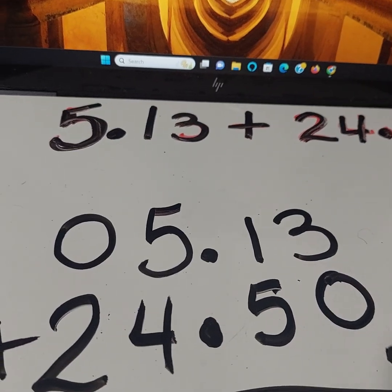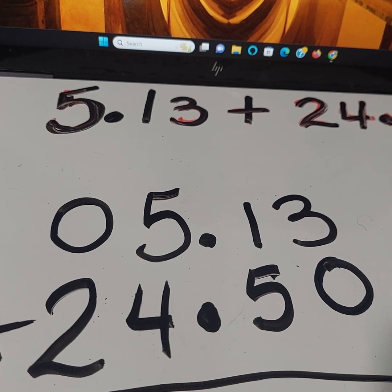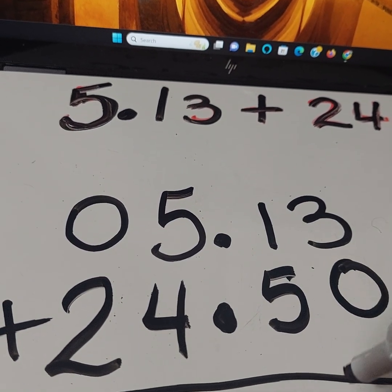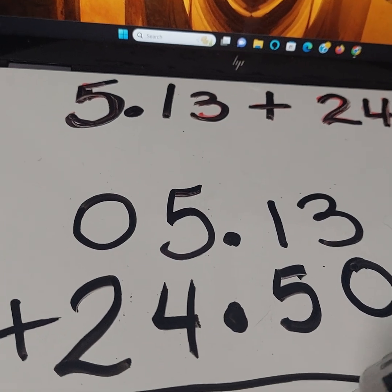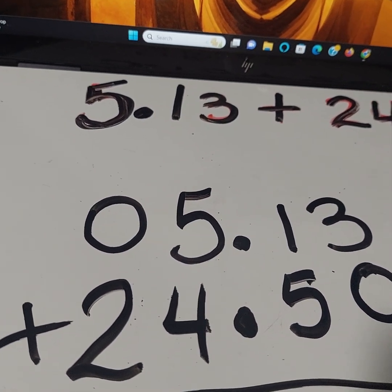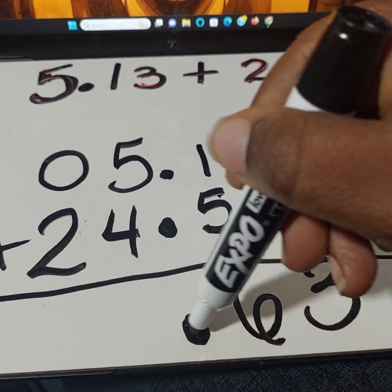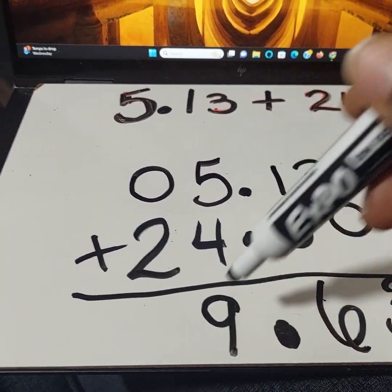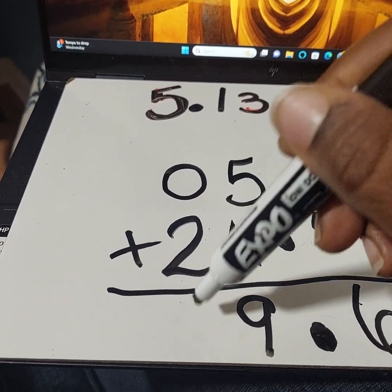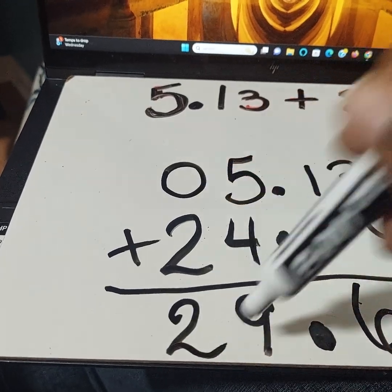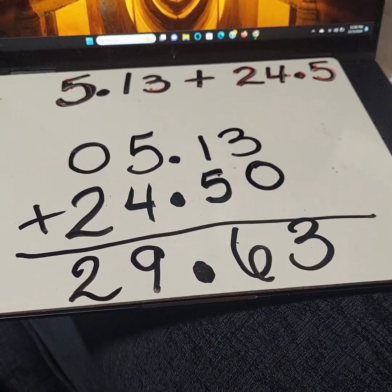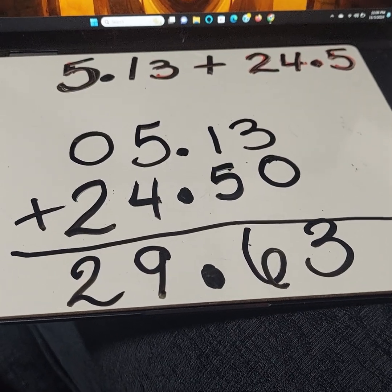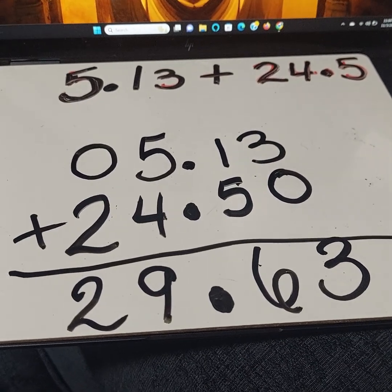We're going to get zero plus three, which is three. Five plus one, or one plus five, you're going to get six. Place your decimal point down. Five plus four is going to be nine. And two plus zero is going to be two. So my final answer is 29.63 (twenty-nine and sixty-three hundredths). Wonderful, I will see you next time.